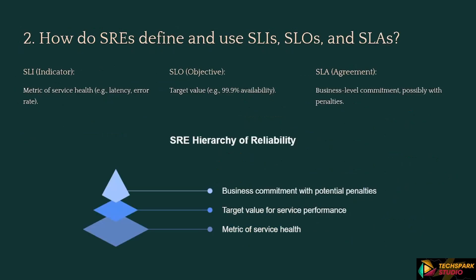Moving to the next one: How do SREs define and use SLIs, SLOs, and SLAs? Possible response: SLI — Indicator Metric of Service Health, example: latency, error rate. SLO — Objective Target Value, example: 99.9% availability. SLA — Agreement, Business Level Commitment, possibly with penalties.